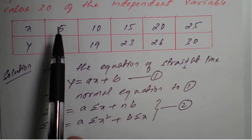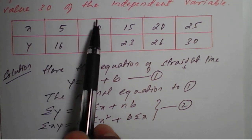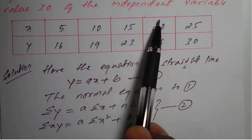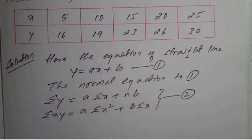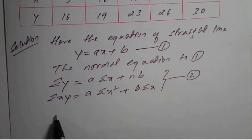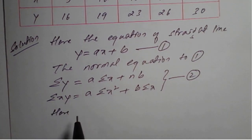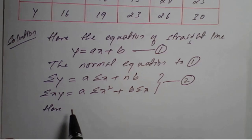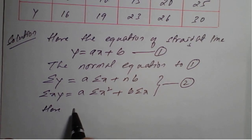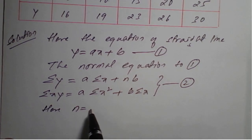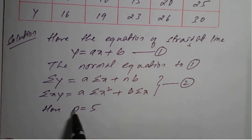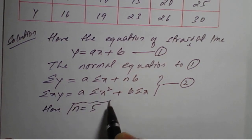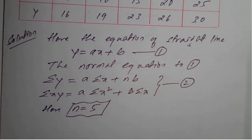The value of n is counted: 1, 2, 3, 4, 5. So the value of n is 5. Now we will prepare a table.